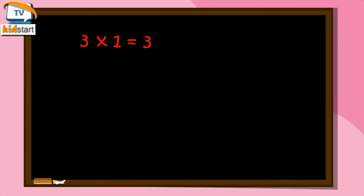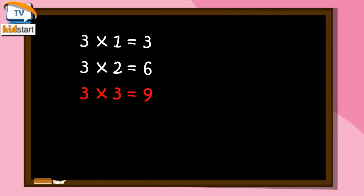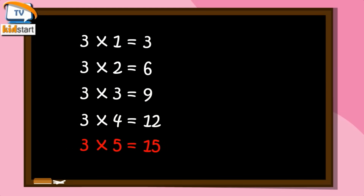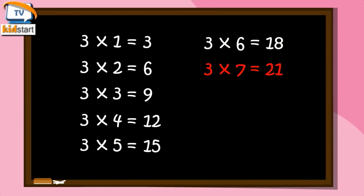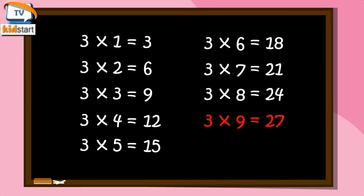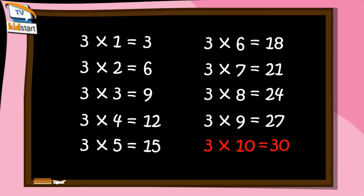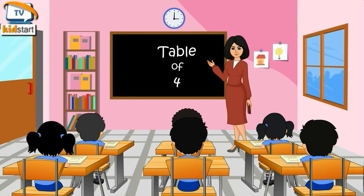Three ones are three. 3 ones are 3. 3 twos are 6. 3 threes are 9. 3 fours are 12. 3 fives are 15. 3 sixes are 18. 3 sevens are 21. 3 eights are 24. 3 nines are 27. 3 tens are 30.